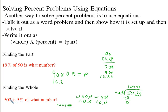That makes sense because half of 10,000 would be 5,000. And 10% of 5,000 is 500. So that makes perfect sense.